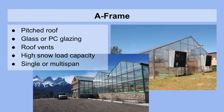The A-frame greenhouse is a very common and quite traditional type of greenhouse. It comprises a pitched roof, which means slanted equally on both sides, with a sharp ridge. It's either glazed in glass or polycarbonate glazing normally. The vents are primarily on the roof and these have a much higher snow load capacity. They can be single or multi-span.